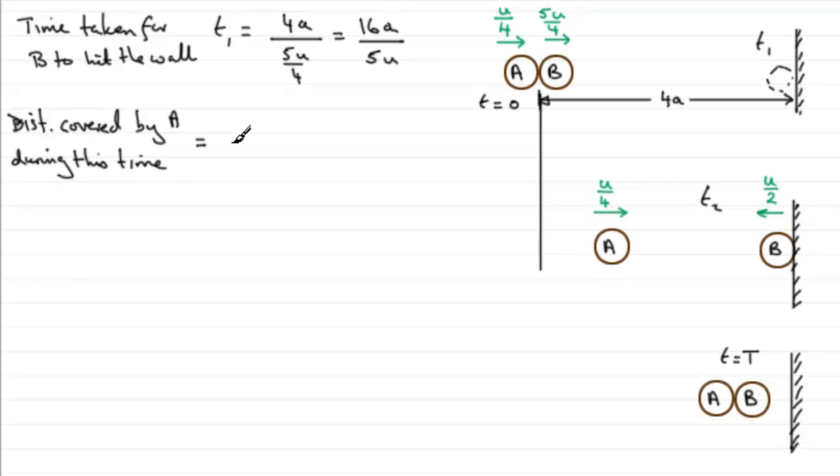So what's that distance going to be? Well, distance equals speed times time. We know that A was moving with a speed of u over 4, multiplied by the time. The time was t1 that we've just found, 16a over 5u. If we work that one out, we end up with those 4s cancelling. You end up with a time of 4a, because the u's cancelled as well, all divided by 5.